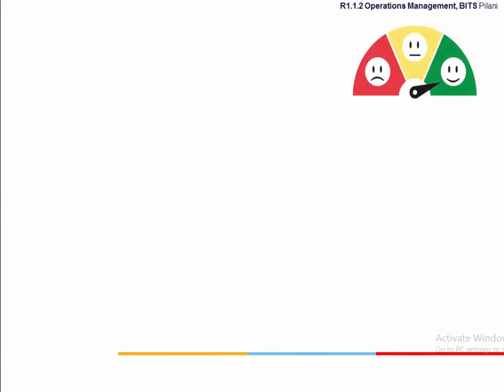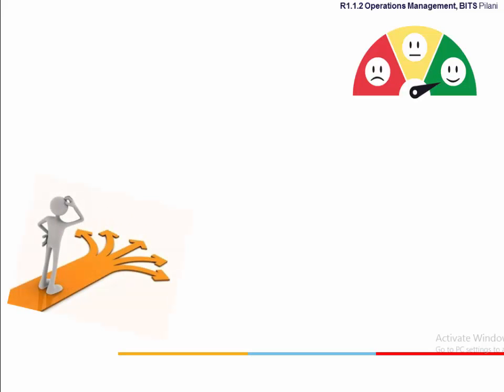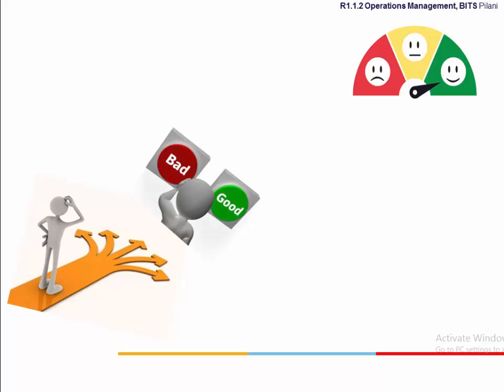Operations managers have to make several right decisions to offer a product or service that will provide a favorable customer experience. Sometimes there are more than one correct decision, and many times it becomes difficult to distinguish the right from the rest. Under such circumstances it is common practice to have an objective signpost. One such signpost is productivity.